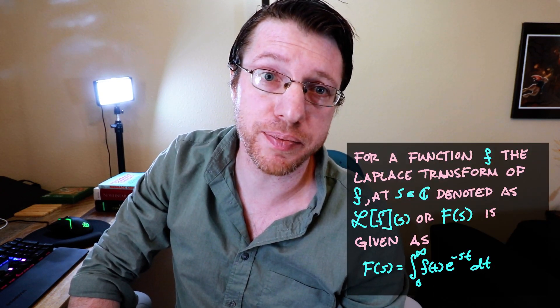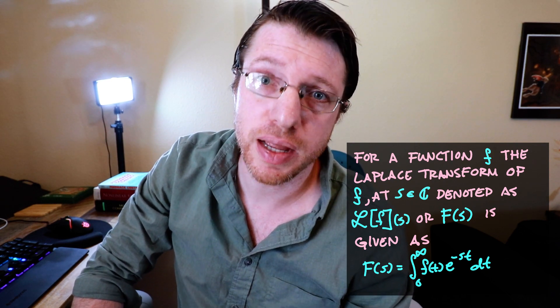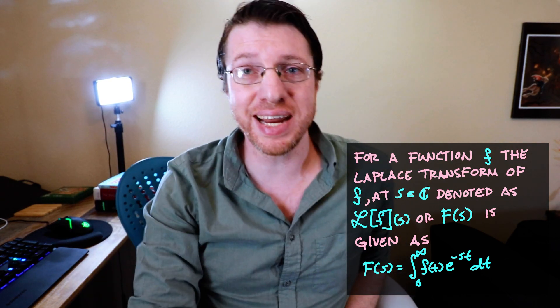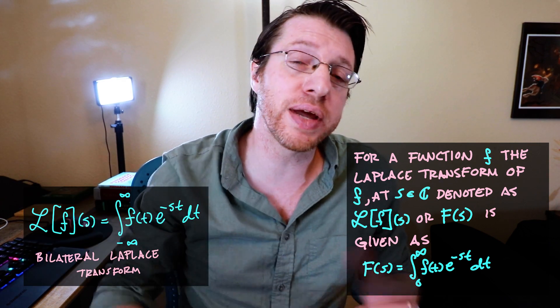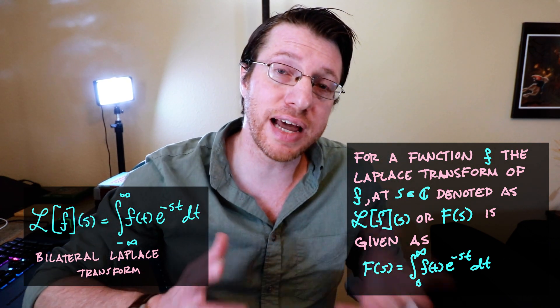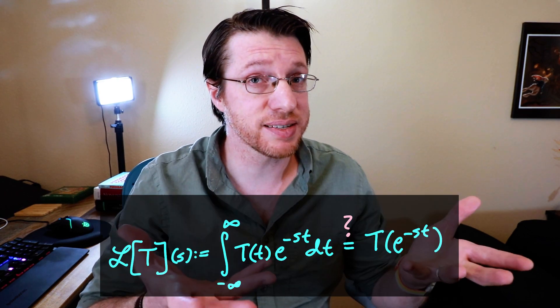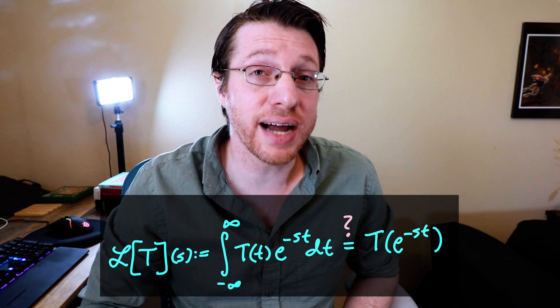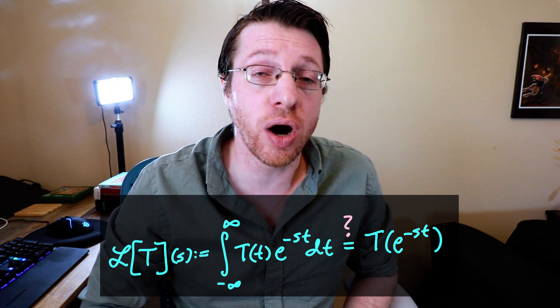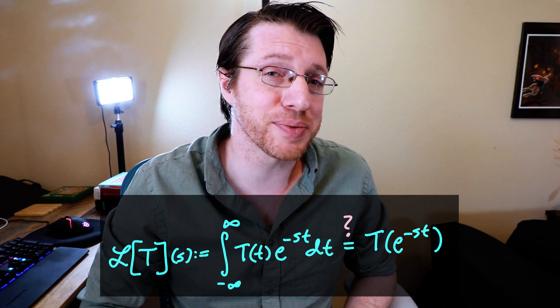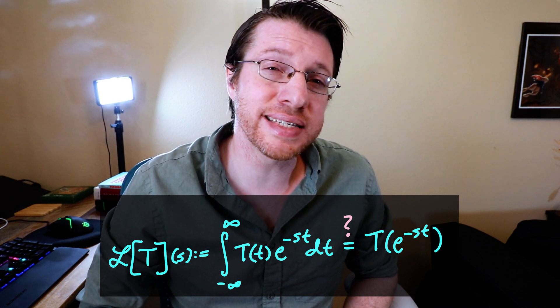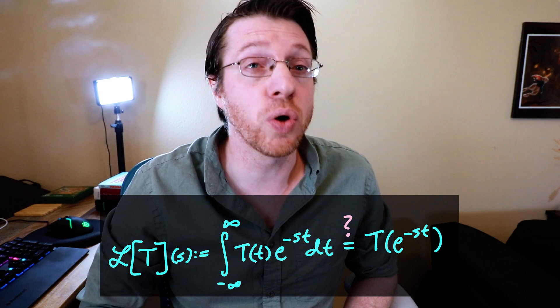Now let's give a rigorous definition of the Laplace transform. We know that for an ordinary function on the half line, which is of order one, this integral converges for sufficiently large s. We call this the Laplace transform of f at s. For the bilateral Laplace transform, we extend this integral to include the left half of the real line. We want to extend this to distributions. Going with the abuse of notation, we can write the Laplace transform of a distribution in integral form. However, we should be aware that this is not an actual integral — it is our distribution acting on e to the minus st. But e to the minus st isn't in L for any s, so we need one more step.